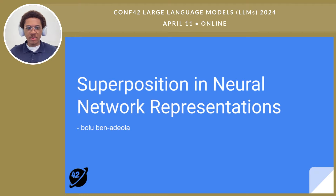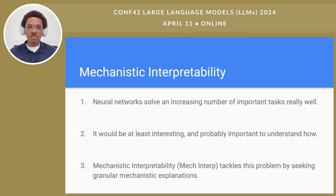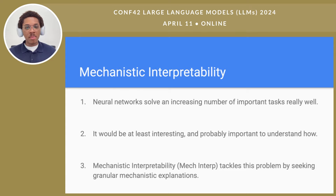Hi there, my name is Bolu and today I'm going to talk about superposition in neural network representations. To motivate that a bit, I'll share some context about where this hypothesis comes from in the field of neural network research. This field is called mechanistic interpretability, and it follows from the reasoning that neural networks solve an increasing number of important tasks really well, and it would be interesting and probably important to understand how they do that. Mechanistic interpretability is basically a subfield that tackles this problem by seeking granular mechanistic explanations for different observed behaviors in neural networks.